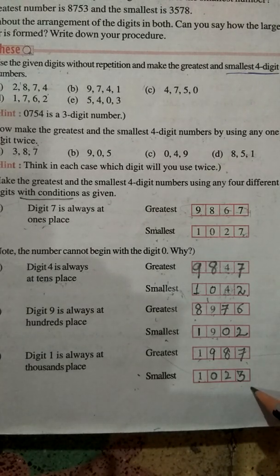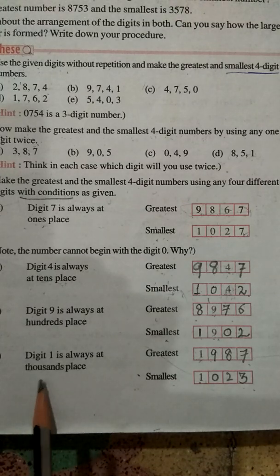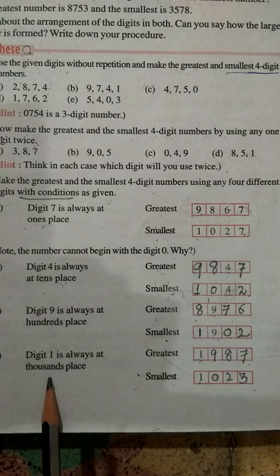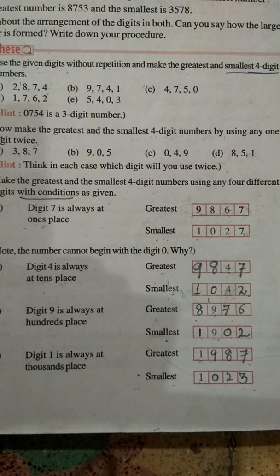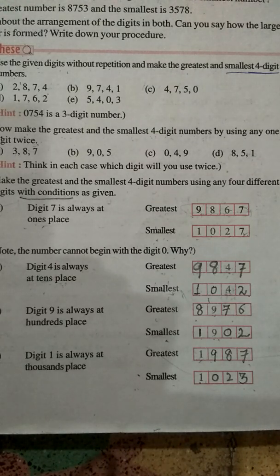Without changing the position of the digits given in the condition, we form the greatest and smallest numbers. In the next video, we will solve question number 4.